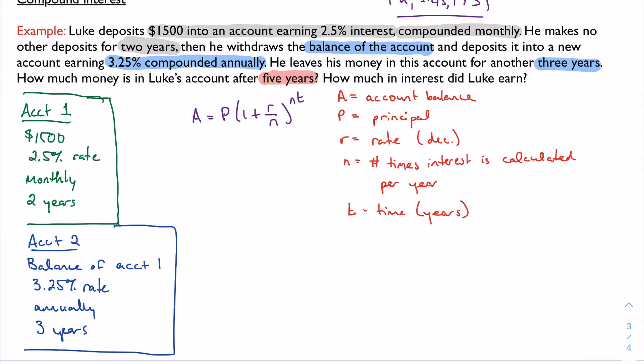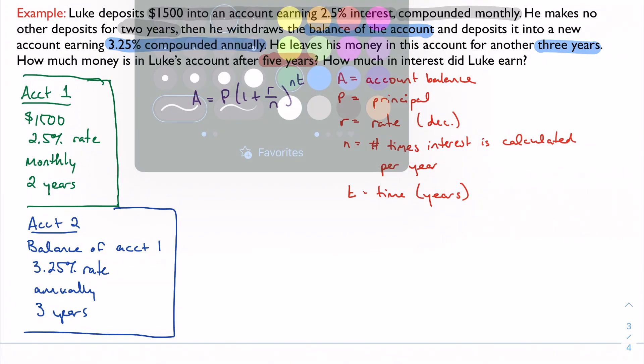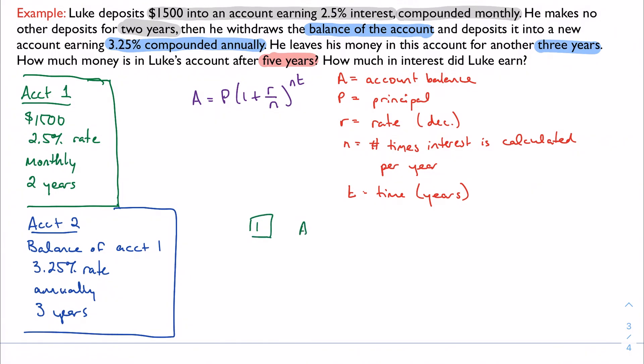I want to know what he's got in the account after five years. Before we tackle the second half of that question, let's deal with what we've got first. Let's do account one first. For account one, we'll stick with my formula. He takes $1,500. That's my principal. It's my starting amount. With an interest rate of 2.5% compounded monthly. So if something is compounded monthly, it happens 12 times a year. If something happens monthly, it happens 12 times a year. So n is 12.